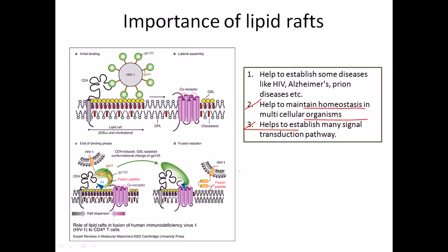For example, in arctic environments, organisms like polar bears at the north pole and penguins at the south pole have a much higher amount of lipid raft regions in their cell membranes so they can cope with environmental temperature changes. Another important aspect of lipid rafts is their role in establishing different diseases — diseases like HIV, Alzheimer's disease, and prion diseases.